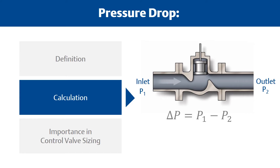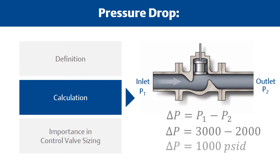For example, if P1 is 3000 psi and P2 is 2000 psi, the pressure drop will equal 1000 PSID. If the flow rate is going to vary, repeat the calculation of P1 and P2 at each flow rate.